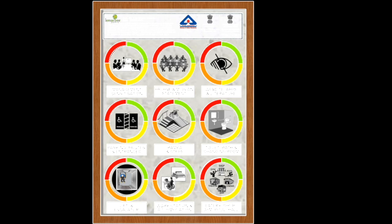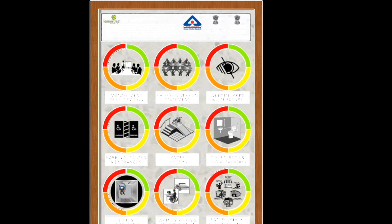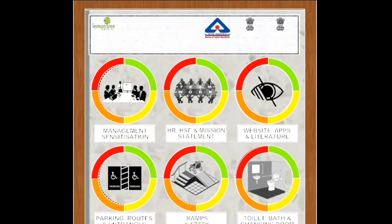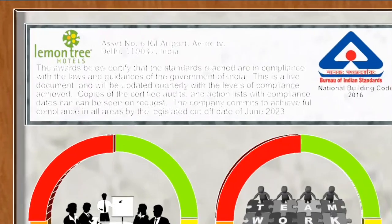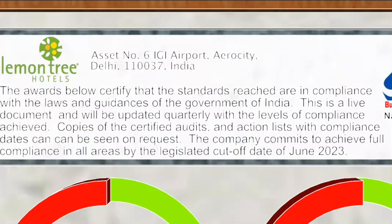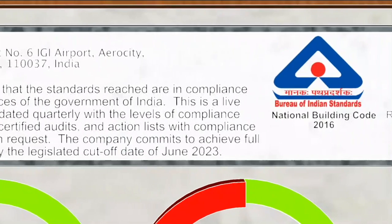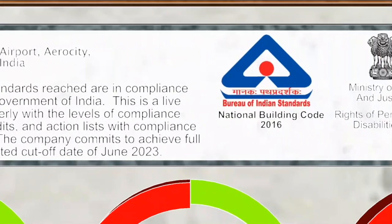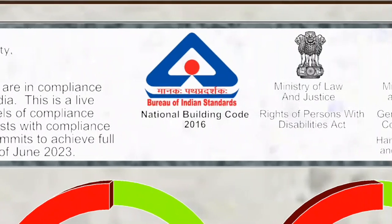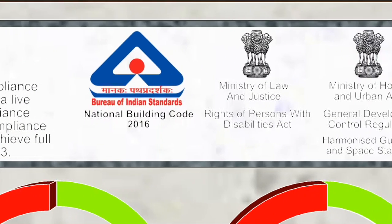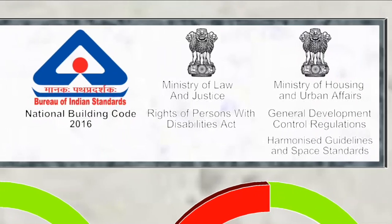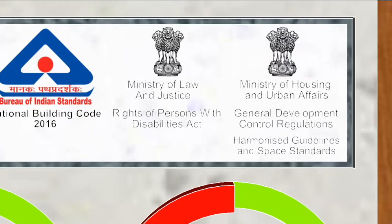At the top of the certificate you will see the premises name and address. Then there is a statement saying what is covered by the certificate and the intention of the certification process, followed by the emblems of the legislative ministries of the government: starting with the National Building Code by the Bureau of Indian Standards; the Rights of Persons with Disabilities Act by the Ministry of Law and Justice; and the General Development Control Regulations and Harmonized Guidelines and Space Standards by the Ministry of Housing and Urban Affairs.